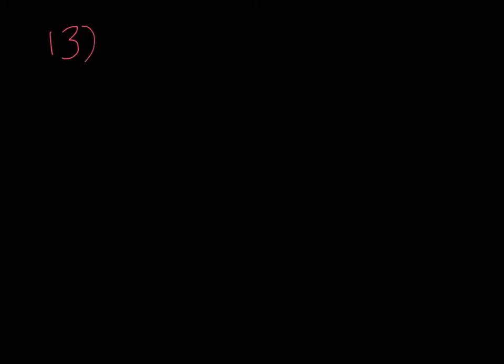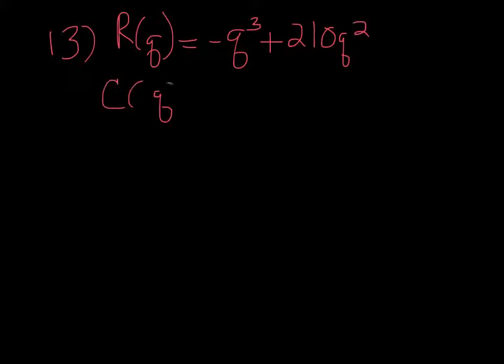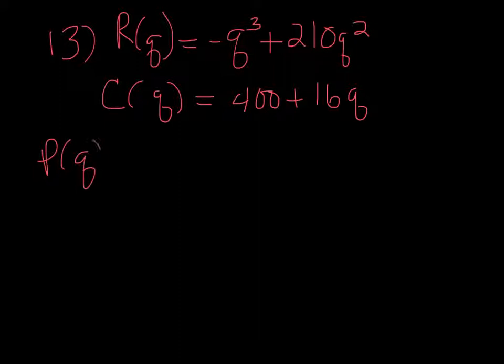Number 13, suppose a company's revenue function is given by R(q) equal to -q³ + 210q². And its cost function is 400 + 16q. Where q is in hundreds of units sold/produced. While R(q) and C(q) are in total dollars of revenue and cost, respectively. We need to find a simplified expression for the marginal profit function. Well, first we need our profit function. So profit is revenue minus cost.